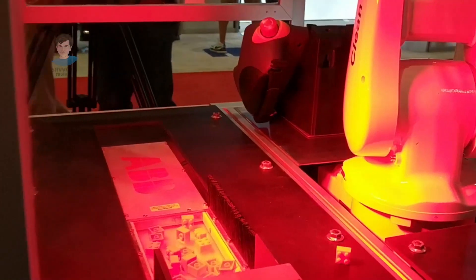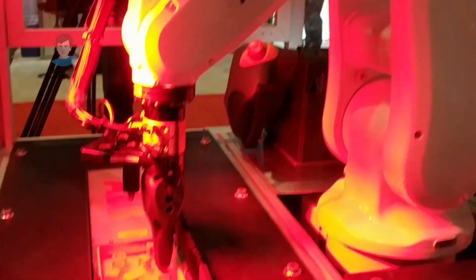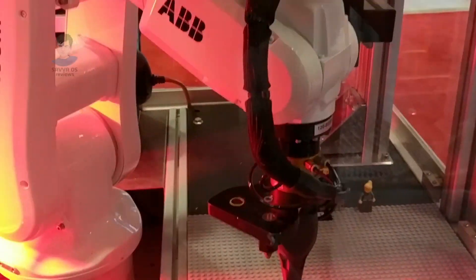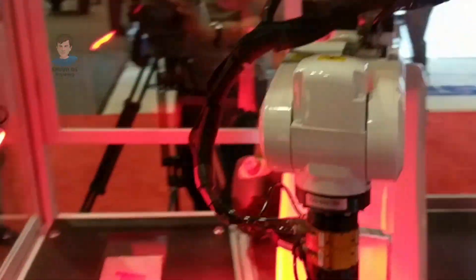This is a sorting machine. It can take different colors or different shapes and put them into different boxes. Right here it's sorting Lego pieces. I think it's a great robot.